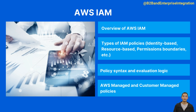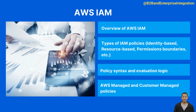2. Policy syntax: AWS IAM policies are expressed in JSON format and include elements such as version, statement, effect (allow/deny), action, resource, and condition. 3. Evaluation logic: when a request is made, AWS uses request information to assess policies. The default is an explicit deny, and an explicit allow overrides this. However, an explicit deny in any policy overrides any allows.